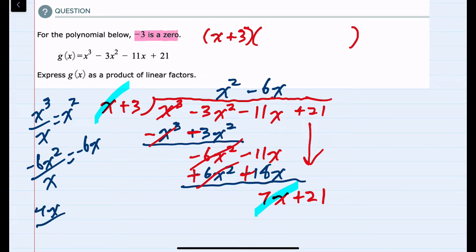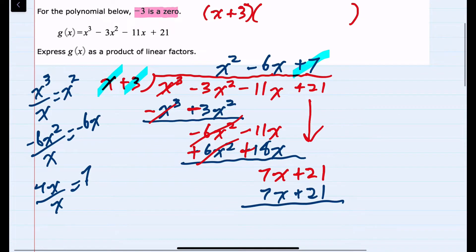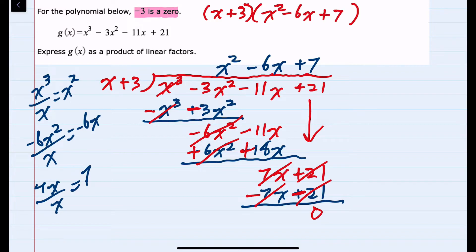I'll again look at these leading terms. This time 7x divided by x is 7. So my last term here is a 7. Multiplying 7 and the x gives me 7x. Multiplying the 7 and the 3 gives me a plus 21. And I do my subtraction one more time by changing the signs. And this time I notice that both terms cancel. So I don't have a remainder, which is what I would have expected since the x plus 3 is supposed to be one of the factors. And I've simplified it now to x plus 3 times x² minus 6x plus 7.